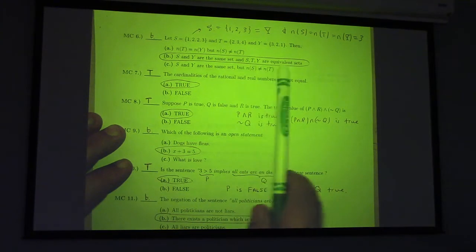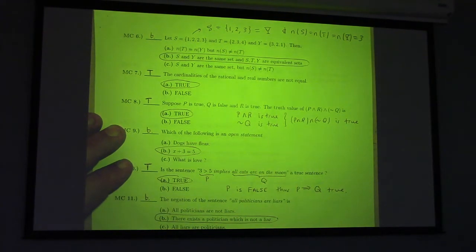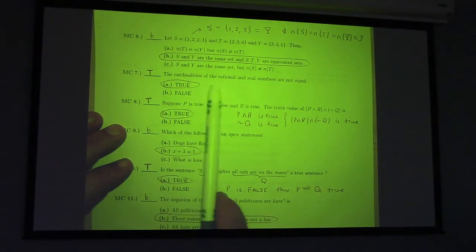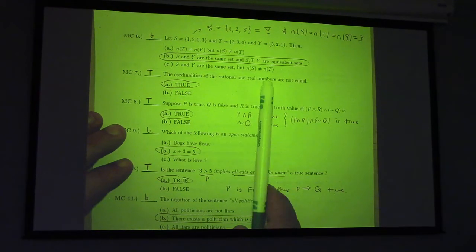And, what does it mean for sets to be equivalent? Do you remember? Two sets are equivalent if they have the same number of elements, right? Two sets are the same if they have the exact same elements. So, the answer here is B. C, in fact, yes, the cardinalities of the rational and real numbers are not equal.